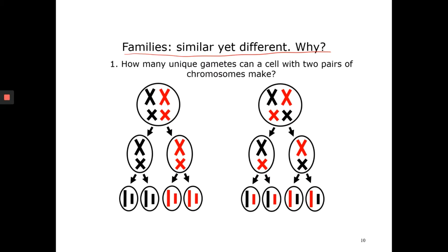So in Metaphase I, the homologous pairs line up at the equator, and their movement is very random. In one scenario, the two chromosomes from the father line up on one side, and the two chromosomes from the mother line up on the other side. At the end of Meiosis I, you get two daughter cells with different chromosomes — one contains the mother's chromosomes, the other has the father's. After Meiosis II, the sister chromatids separate, producing two distinct gametes.